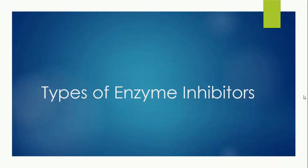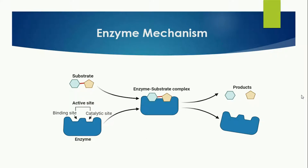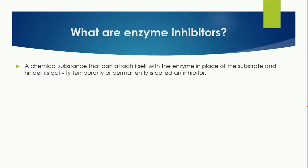Welcome back. Today we are going to study about the types of enzyme inhibitors. If we talk about the simple mechanism of enzyme action, we know that the substrate binds to the enzyme at its active site, and as a result an enzyme-substrate complex is formed. After the formation of the enzyme-substrate complex, the substrate is broken down into products and the enzyme is ready for another reaction.